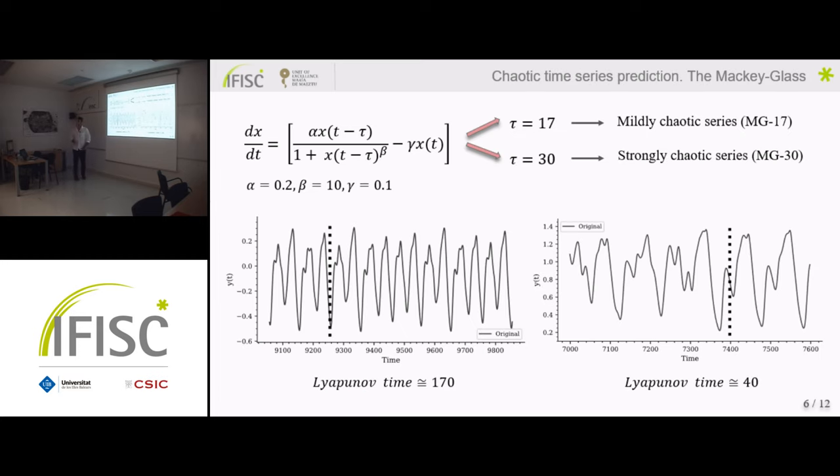Now our training time series is not just any random time series. We are going to be using a chaotic time series coming from the Mackey-Glass equation. This is a time delay differential equation. Usually these parameters are used in literature. But what is more important is that this type of series presents a chaotic behavior when the time delay tau is over 16.8. So then we can define two different types of series: one that is going to be mildly chaotic for tau equal to 17, and one that is going to be strongly chaotic for tau equal to 30.